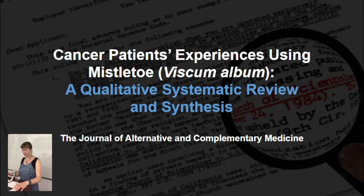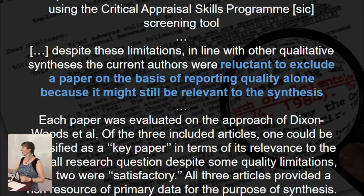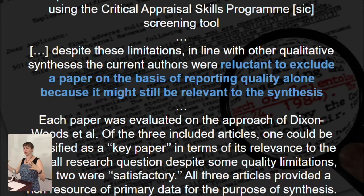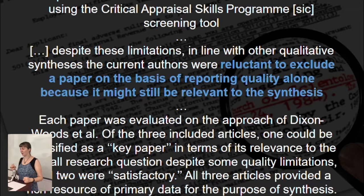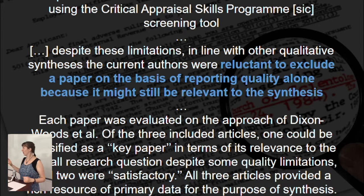A paper from the Journal of Alternative Medicine — studying mistletoe, which seemed like an odd title — provided a critical appraisal table and a summary of results. What I don't like is the phrase 'reluctant to exclude papers on the basis of reporting quality alone, because it might still be relevant to the synthesis.' That's basically saying even though the papers were poor quality, they looked like they might be useful. I find that really questionable. An article being interesting is not good enough reason to include it in a systematic review.